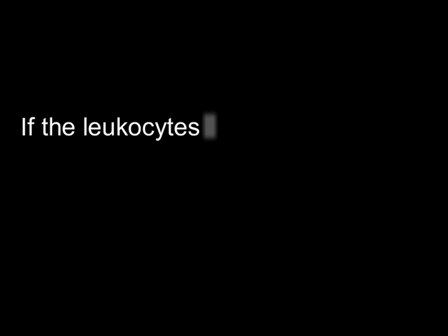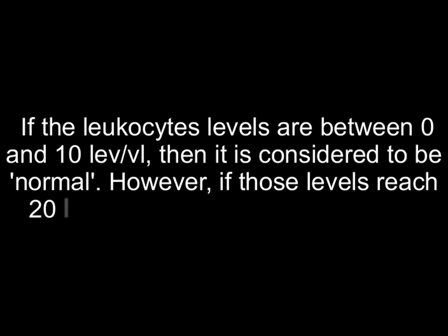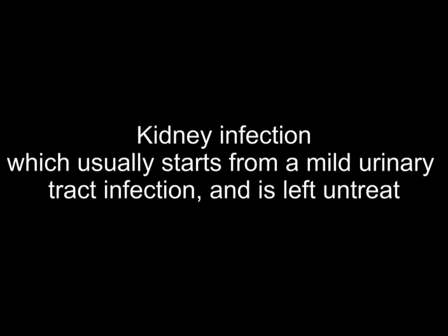If the leukocyte levels are between 0 and 10 cells/μL, then it is considered to be normal. However, if those levels reach 20 cells/μL or more, then it indicates underlying urinary tract infection, inflammation of the urinary tract, hematuria (presence of blood in urine), weaker bladder muscles, or kidney infection, which usually starts from a mild urinary tract infection left untreated. Additionally, bacteria from an infected person can move up to another person's urethra during sexual intercourse, resulting in leukocytes in urine.